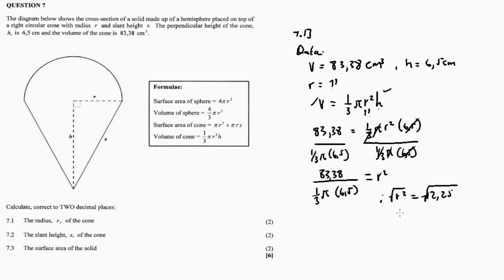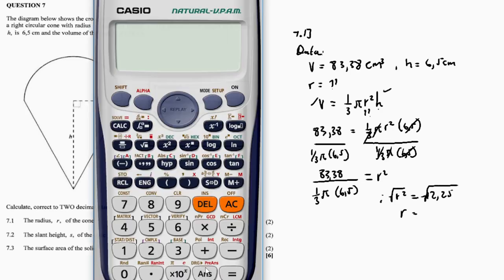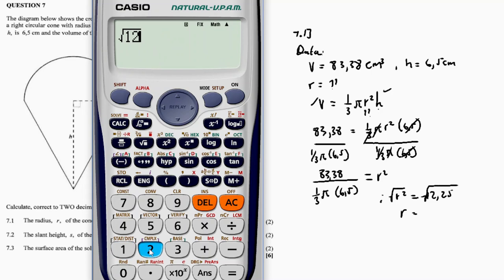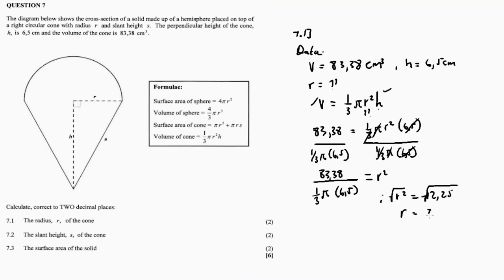Take the square root of both sides: r = √12.25 = 3.50. So r = 3.50 centimeters — and take note of the units, centimeters. This is our answer for 7.1.